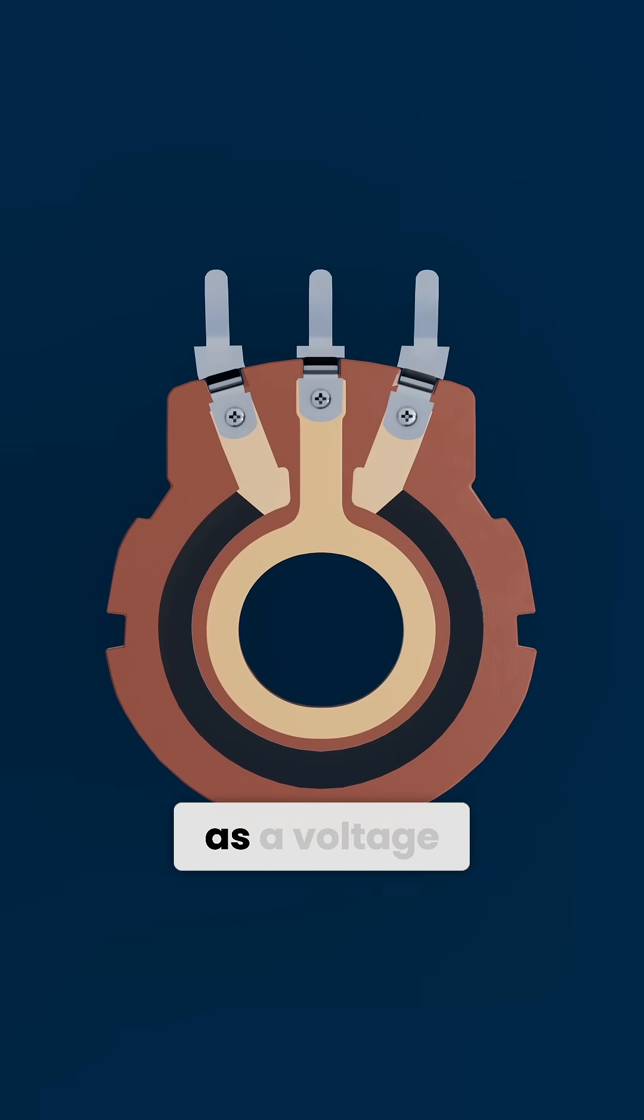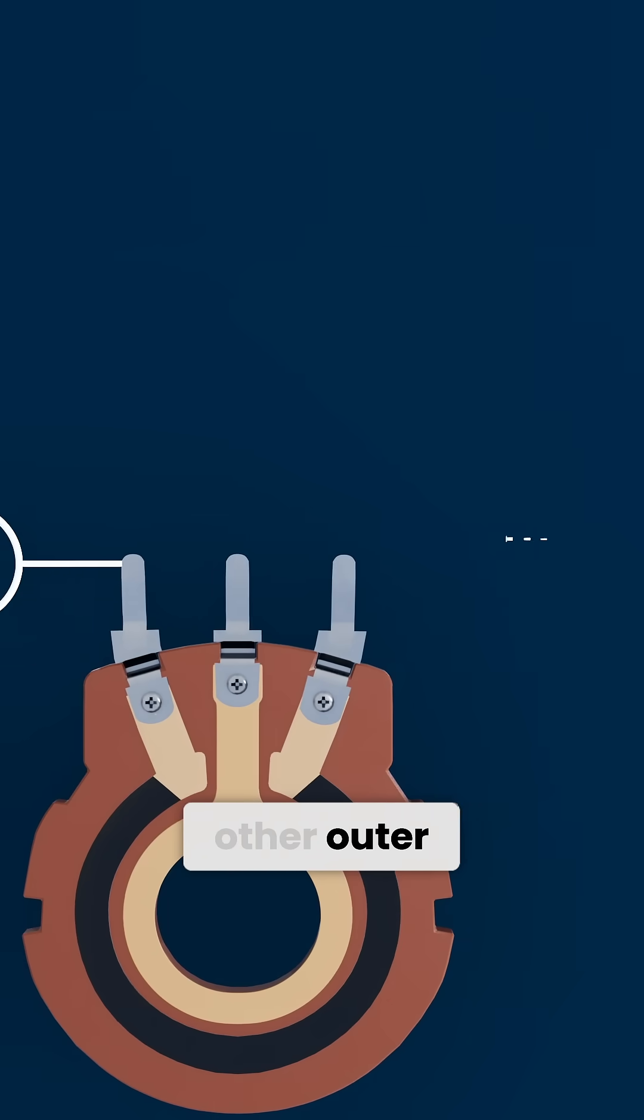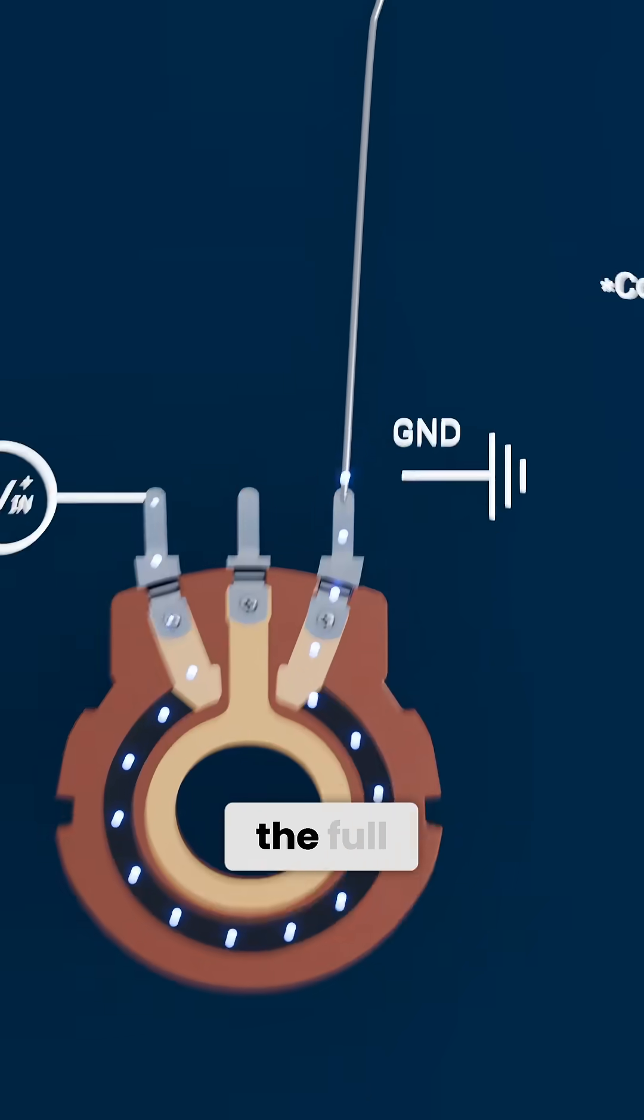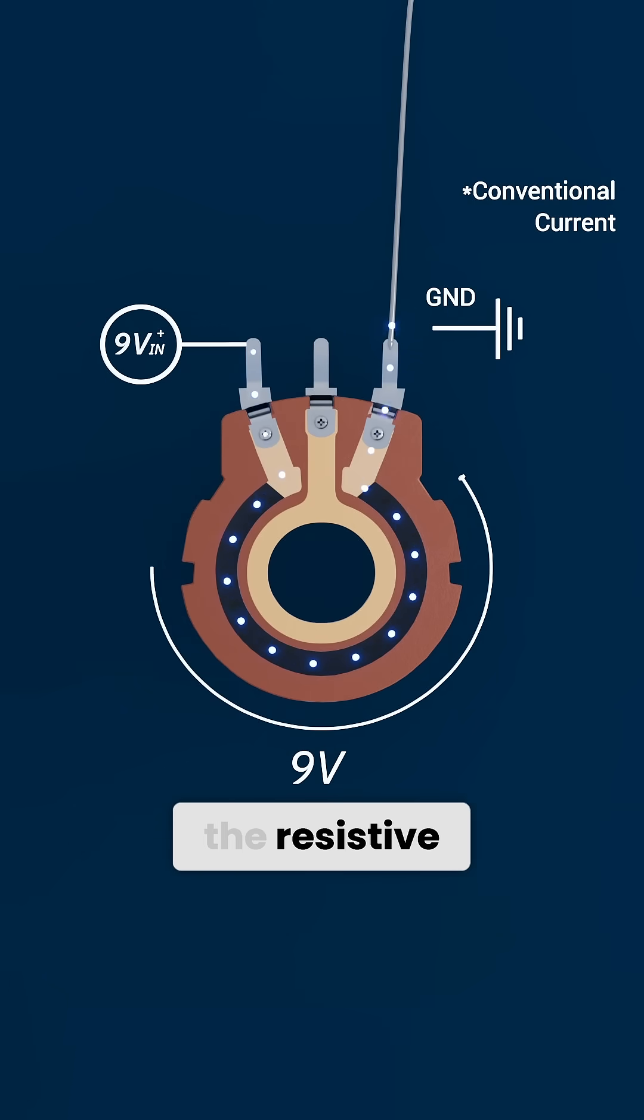When you use a potentiometer as a voltage divider, you normally connect one outer terminal to the positive supply and the other outer terminal to ground. That means the full supply voltage appears across the entire length of the resistive element.